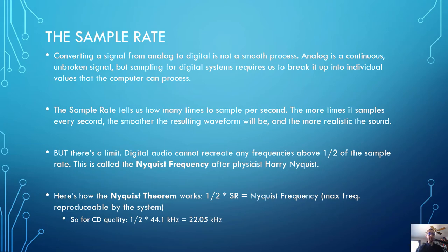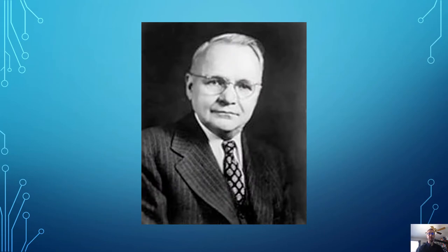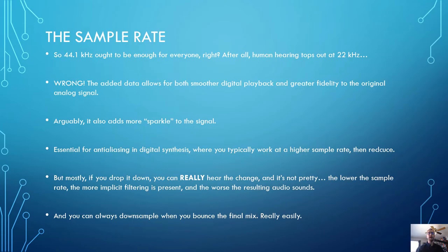The Nyquist theorem states that one half of the sample rate is the Nyquist frequency, which is the maximum frequency reproducible by the system. So for CD quality, we have 44,100 samples per second. Half of that is 22,050 hertz — that is well above the range of human hearing, and that is our maximum frequency. So 44.1K ought to be enough for everybody, right? Not quite.